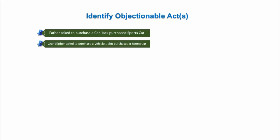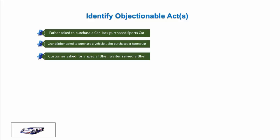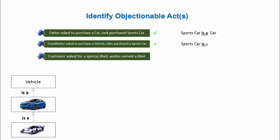Identify objectionable act from these statements. Father asked to purchase a car, Jack purchased sports car. Grandfather asked to purchase a vehicle, John purchased a sports car. Customer asked for a special bheil, waiter served a bheil. Now here the sports car is a car and car is a vehicle. So we can say sports car is a vehicle. So sports car is a car is correct statement.